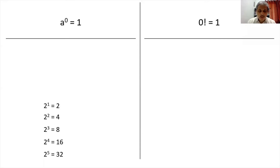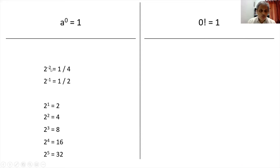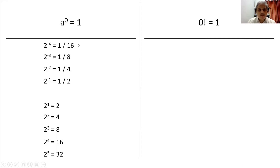The same thing happens when we go to negative indices. So 2 raised to minus 1 is 1 by 2, 2 raised to minus 2 is 1 by 4, 2 raised to minus 3 is 1 by 8, and 2 raised to minus 4 is 1 by 16.